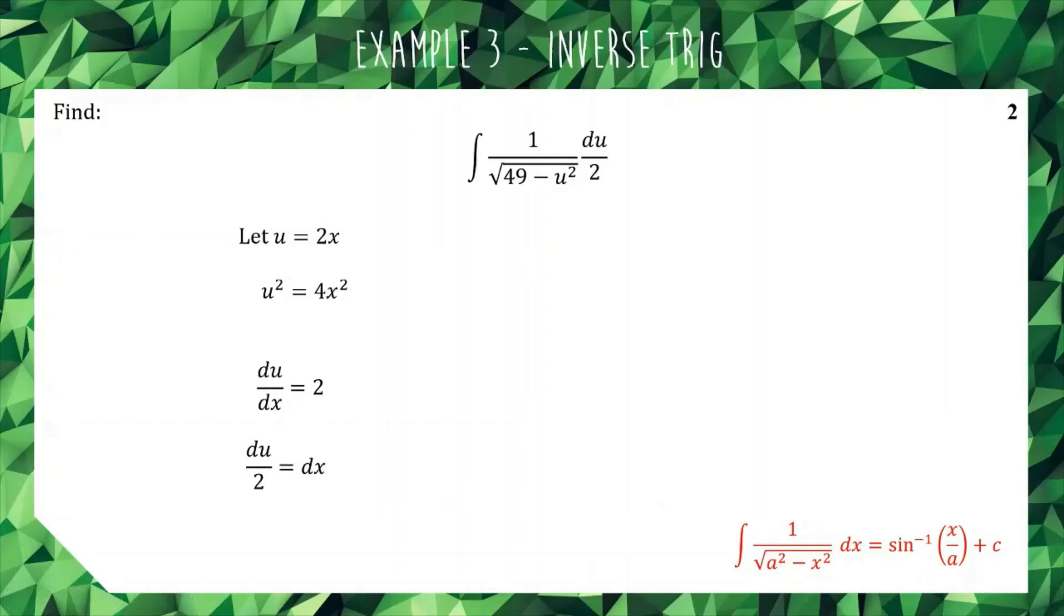Now we have an integral all in terms of u, so we can party on from here. Probably a good move here is to take the 1/2 out the front of the integral, so you don't have to worry about it for now, because now this is a very standard integral. If we compare this to the formula, we can see that this should integrate to inverse sine of u/7, because there's your a², so a is going to be 7. We'll apply the integration here using that formula.